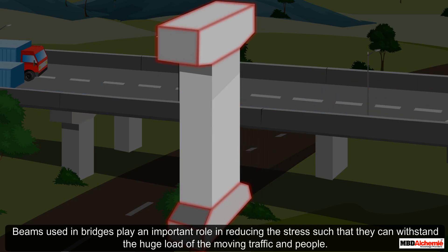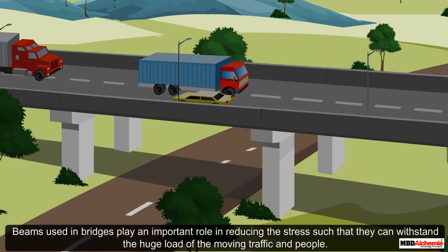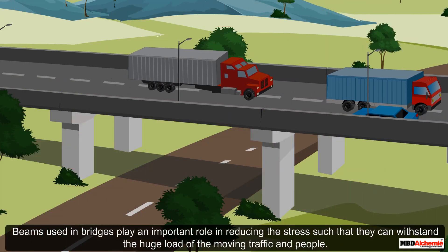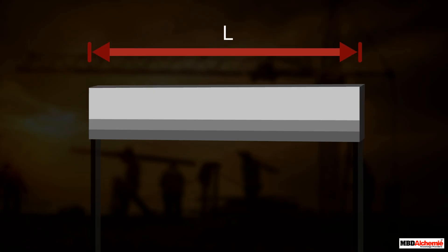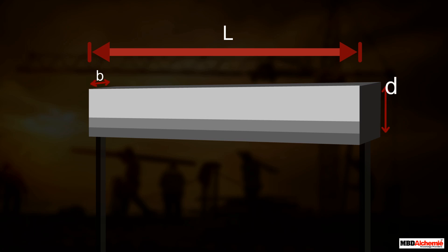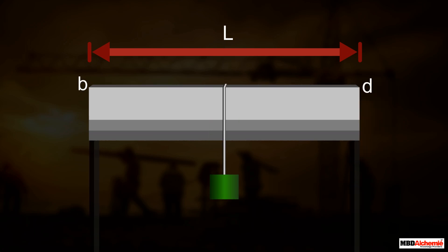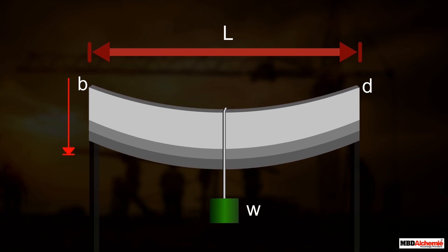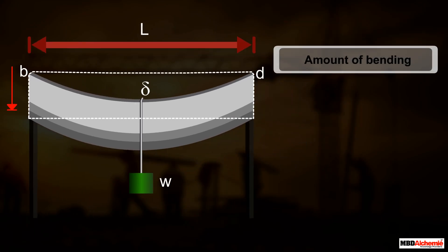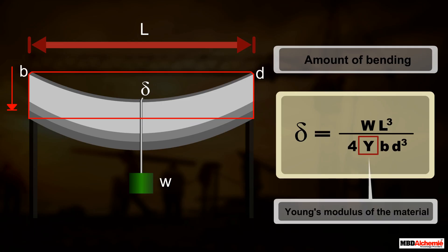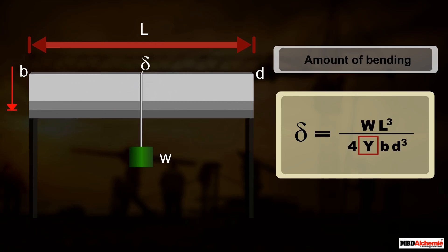The special design of bridges makes use of beams, which play an important role in reducing stress so they can withstand the huge load of moving traffic and people. Consider a beam of length L, breadth B, and depth D, loaded at the center by a load W — it bends by an amount delta given by a specific formula.